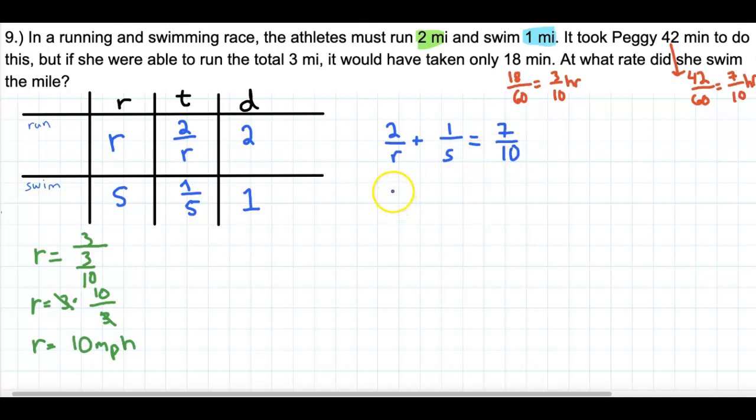We know what R is, so I'm just going to substitute that. So 2 over, and I'm going to substitute, we know this is 10, because the rate is already determined for, the running rate is already determined. All right, plus 1 over S, is equal to 7 tenths.